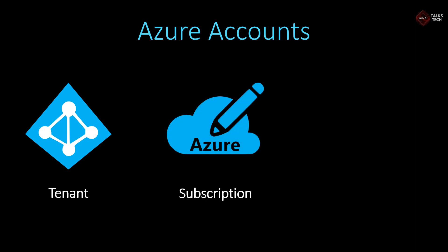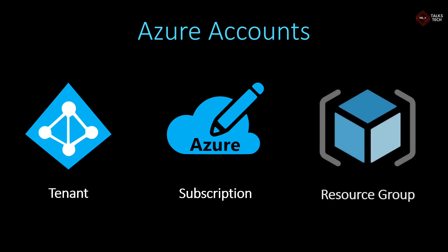Once the subscription has been created, we need to create something called a resource group. Consider a resource group like a folder in a file structure — you can create a folder and place multiple files inside it. Likewise, once the resource group has been created, you can create any resources inside it. The flow looks like this: the higher level is the tenant, then the Azure subscription, then the resource group. You can create a resource only when you have a resource group, a resource group only if you have a subscription, and a subscription only when you have created an Azure tenant account.